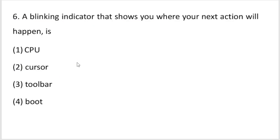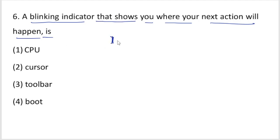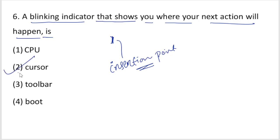Question number 6: a blinking indicator that shows you where your next action will happen. It is a blinking indication at a certain point — that is a cursor. A cursor is a blinking indicator that shows the location of your next action. It is not a pointer; it is a cursor.